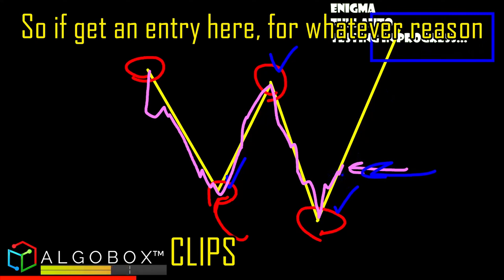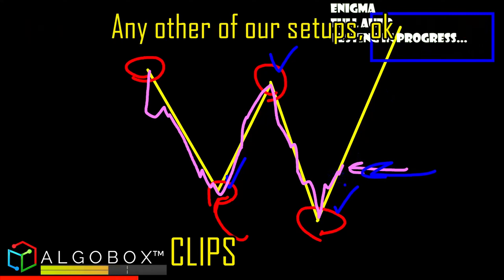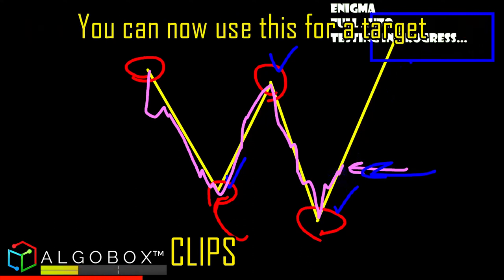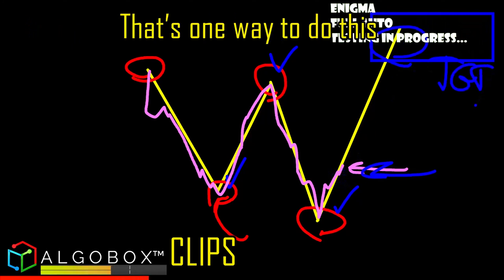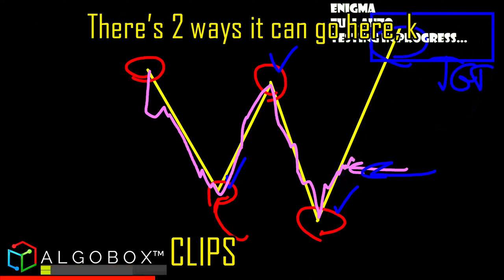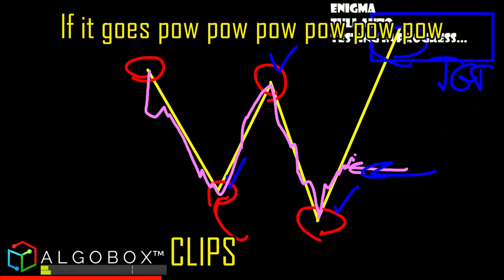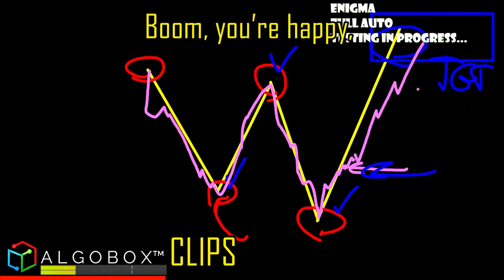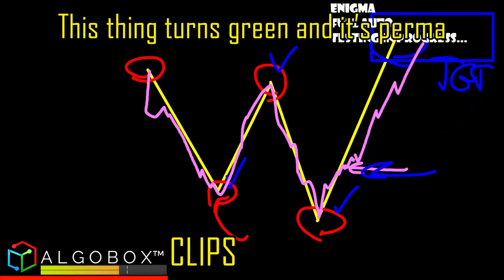If you get an entry here for whatever reason — any other of our setups — you can now use this PRZ for a target. That's one way to do this. But all of a sudden if price is coming up this way, there are two ways it can go. If it goes pow, pow, pow, boom — you're happy, the thing turns green.